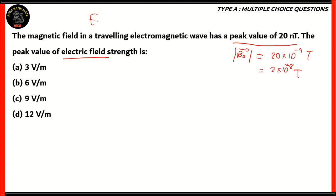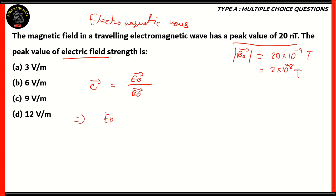In the chapter Electromagnetic Waves, it is shown that the speed of light as a vector is represented by dividing the electric field vector by the magnetic field vector. Therefore, the electric field vector will be equal to the magnetic field vector's dot product with the speed of light. Since it's a dot product, the modulus of the electric field vector will be equal to the modulus of the magnetic field vector times the modulus of the speed of light.